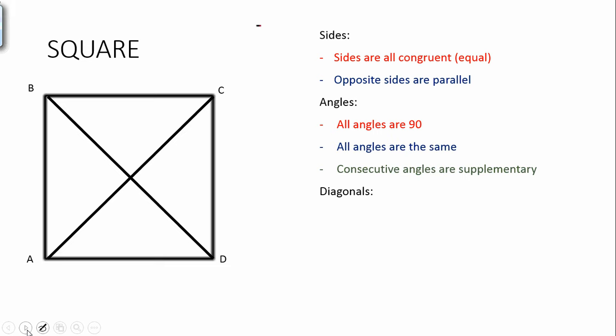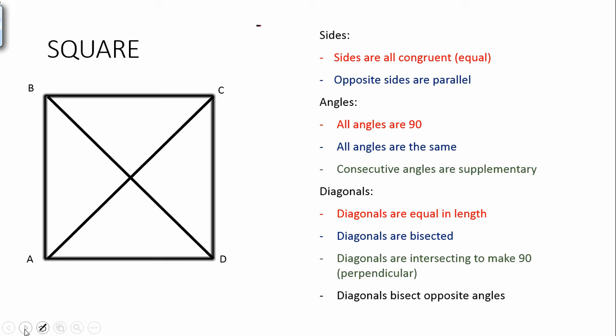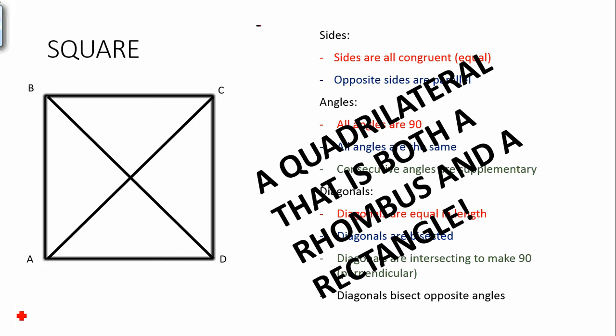There would be a lot of properties going on. We would have all sides congruent, opposite sides are still parallel, all the angles are 90 degrees, in fact all the angles would be the same, consecutive angles are still supplementary, diagonals are equal in length, they are bisected, they are making 90 degrees, they are bisecting opposite angles, so much going on. To sum it all up, let's just write in that little flap that a quadrilateral that is both a rhombus and a rectangle, that's all Square is.